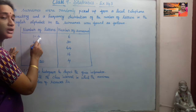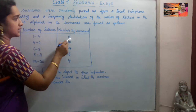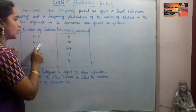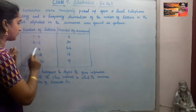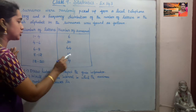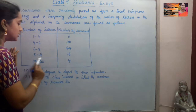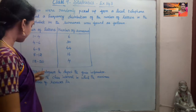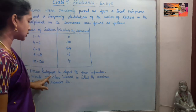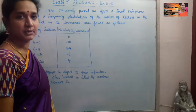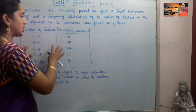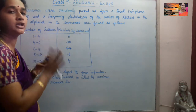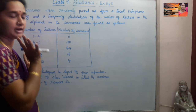The number of letters 1 to 4 has 6 names, 4 to 6 has 30, 6 to 8 has 44, 8 to 12 has 16, and 12 to 20 has 4. We are asked to draw a histogram to depict the given information.